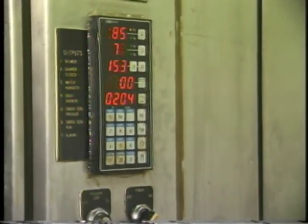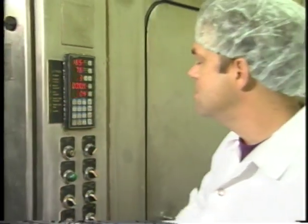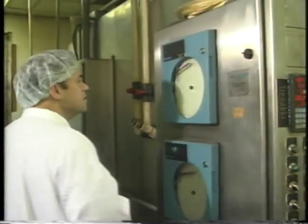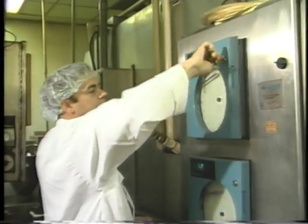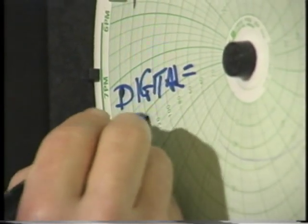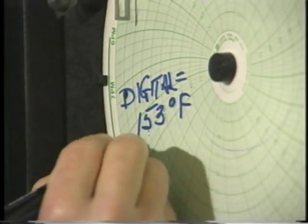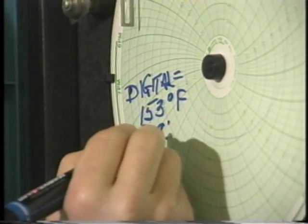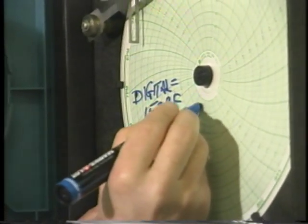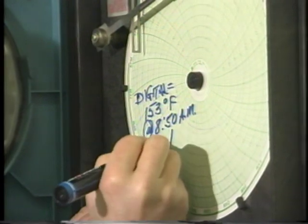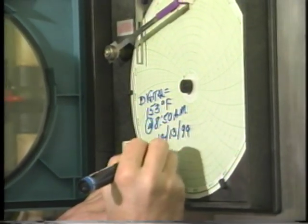To monitor CCP-1, the smokehouse operator watches for the digital display on the front of the house to reach 153 degrees Fahrenheit. At this point, the employee compares the digital reading to the temperature indicated by the chart recorder on the side of the house, and records the date, time, digital temperature, and initials the record, all on the same recording chart paper.